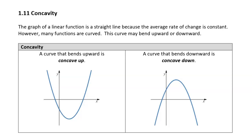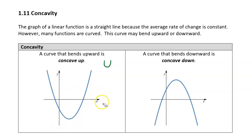We've got two types of curvature — it either bends upward or bends downward. If it bends upward, like a U, we call it concave up. Just remember: U is for up. So if it bends in a U shape, it's concave up. If it bends downward — an inverted U — then it's concave down.